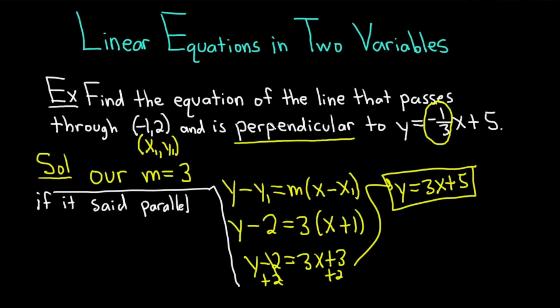If it said parallel in the question, it would be different. Parallel lines have the same slope. In this case, m would just be -1/3. Whenever it's parallel, you have the same slope. Whenever it's perpendicular, it's the negative reciprocal. You just flip it and put a negative.